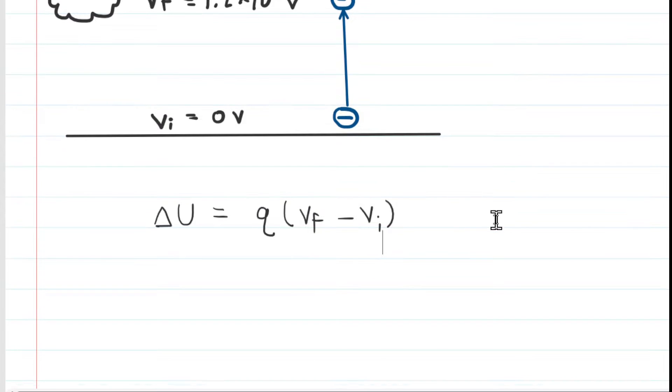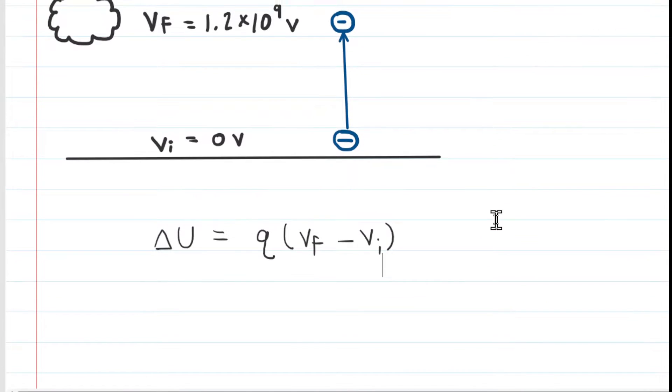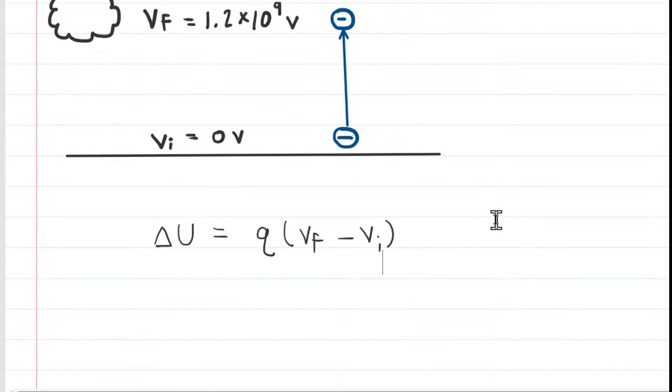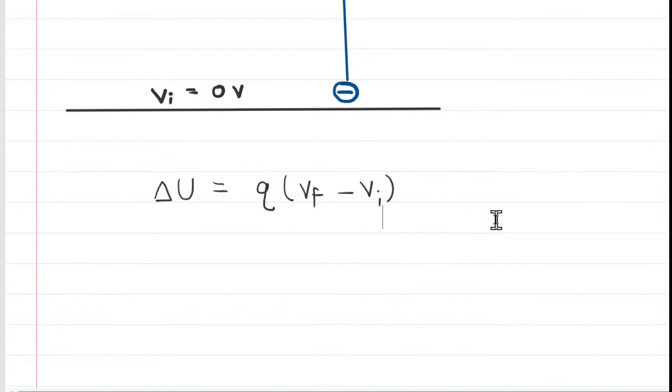We have the values for the electric potentials shown in the picture. We know that this charge is an electron, so we know the value of q. We can actually go ahead and calculate by plugging in the values.